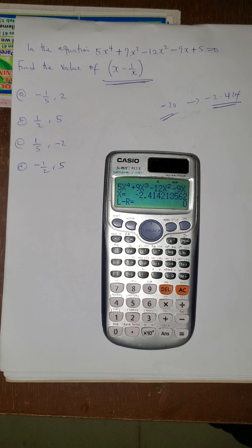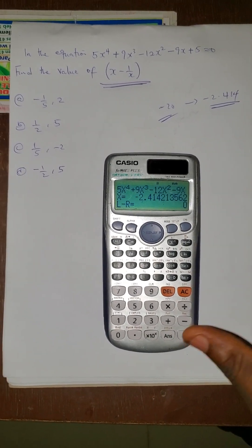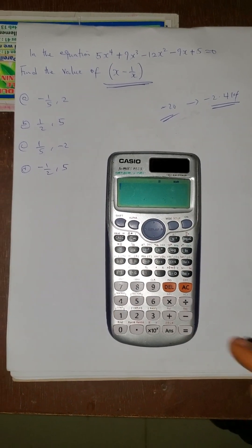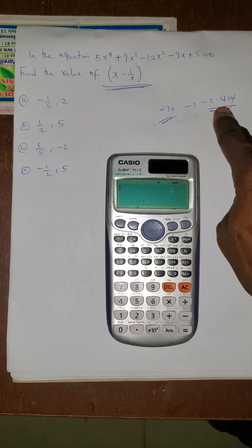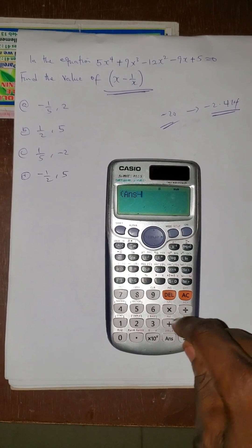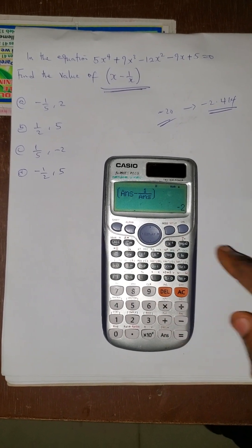I just want to show you something. When I press this, it gave me the value of x to be this. I press AC. That means the value of my x I've gotten it. And that will now be answer - 1 / answer. Then close the bracket. Press equals to. The answer is -2.